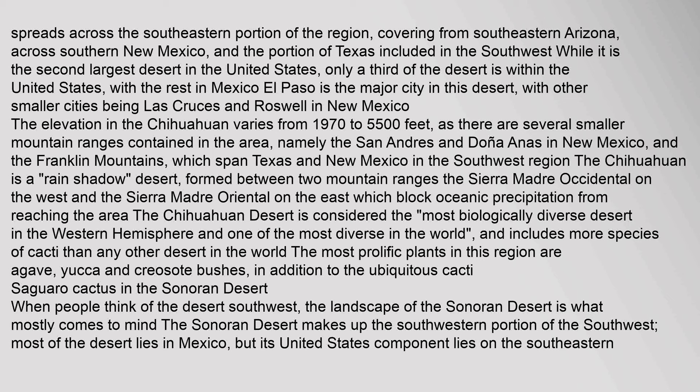El Paso is the major city in this desert, with other smaller cities being Las Cruces and Roswell in New Mexico. The elevation in the Chihuahuan varies from 1,970 to 5,500 feet, as there are several smaller mountain ranges contained in the area, namely the San Andres and Doña Ana's in New Mexico, and the Franklin Mountains, which span Texas and New Mexico. The Chihuahuan is a 'rain shadow' desert, formed between two mountain ranges — the Sierra Madre Occidental on the west and the Sierra Madre Oriental on the east, which block oceanic precipitation from reaching the area.